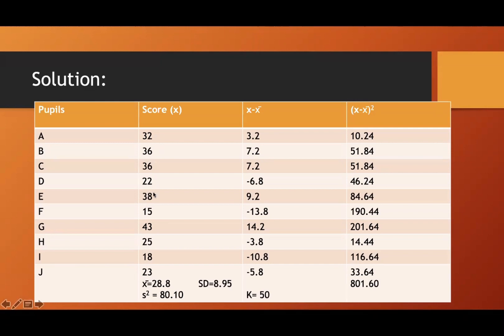And then after that, you are going to subtract the mean, or the X, this score minus the mean. So 32 minus 28.8, 3.2. 36 minus 28.8, 7.2. 22 minus 28.8, negative 6.8.